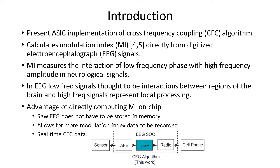The advantage of directly computing the modulation index on a chip is that the raw EEG does not have to be stored in memory. Storing the raw EEG data over a couple of hours or days can easily take up a lot of space. Having it on a chip also allows for more modulation index data to be calculated and collected. Instead of a subject having to sit in a lab, they'll be able to walk around with our CFC system. Another important aspect is that real-time cross-frequency coupling data can be collected, which may be useful for brain-computer interfaces or other applications.